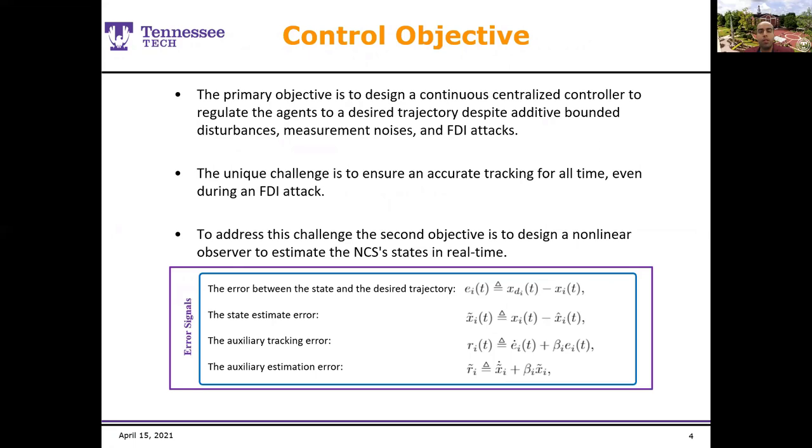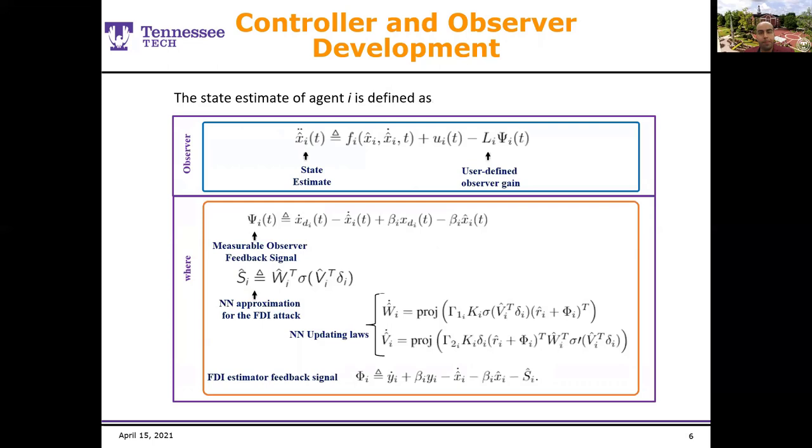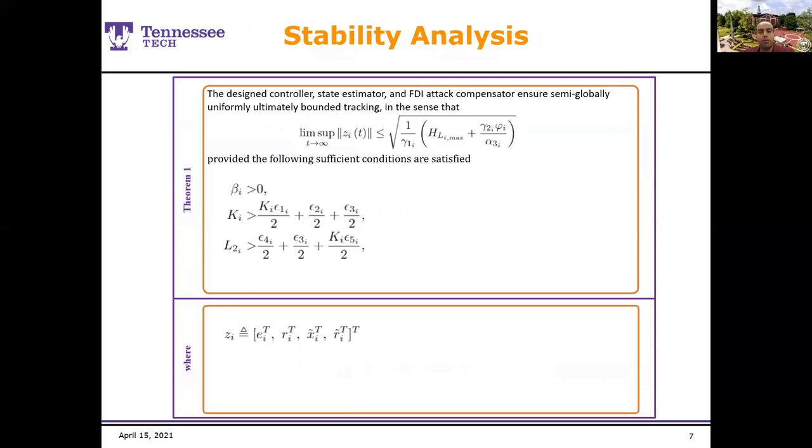Our objectives are to design a secure controller and in order to do that, we need to have measurement signals. But because FDI attacks are injected to measurement signals, they are faulty or they are not measurable. So, in order to tackle this issue, we design a non-linear observer. And in order to do that and quantify the error, we design or develop these error signals. The centralized controller is designed based on Lyapunov stability analysis. We develop a measurement feedback signal which uses the received faulty measurement signals and estimated FDI attacks. A state estimator is designed based on Lyapunov stability analysis which uses both learning and model-based techniques. The FDI attack is also estimated using a neural network while its parameters are updated based on Lyapunov stability analysis.